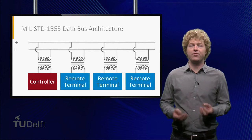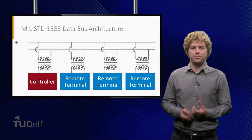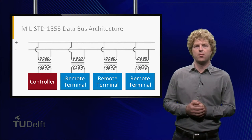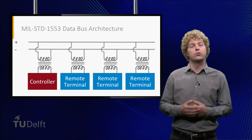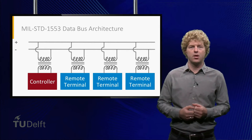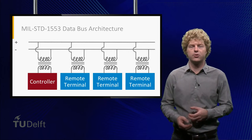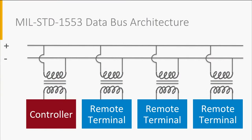The military standard 1553 is very common in large spacecraft. People also simply call it MILBUS. The data bus comprises a bus controller and up to 31 remote terminals. The bus controller could for instance be an onboard computer. A remote terminal could be a controller of a subsystem, or it could be a router connected to multiple other subsystems. It uses two wires for a differential signal. Remote terminals tap into the same physical bus. This bus topology is called a linear bus.